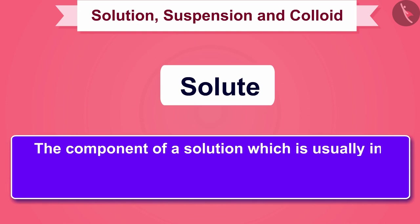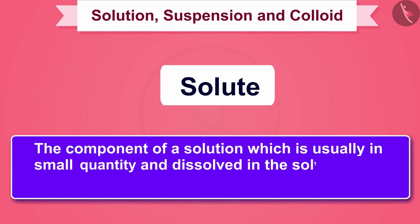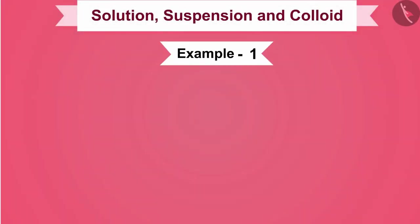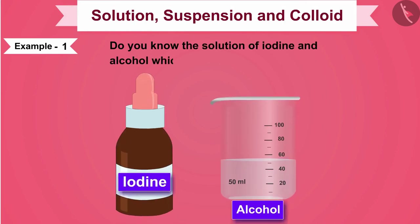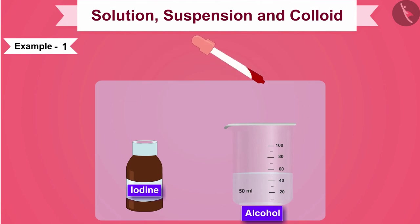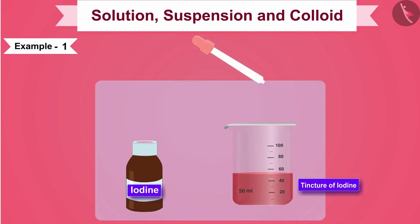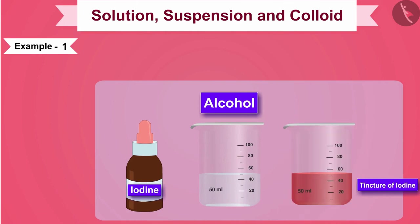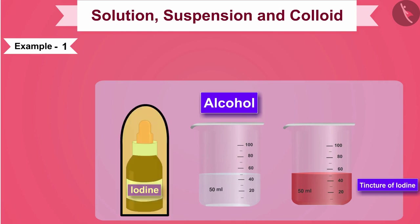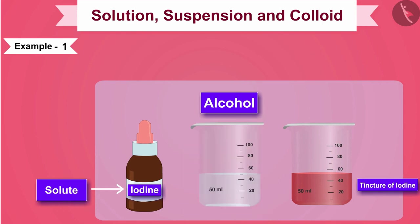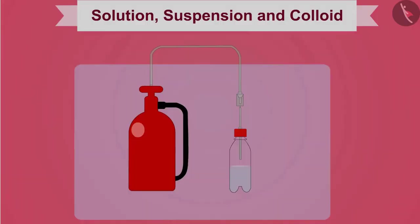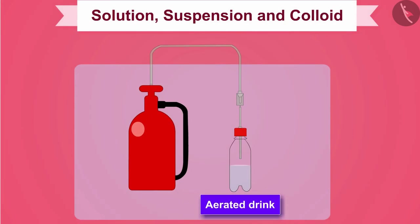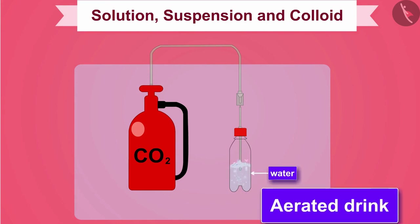The component of a solution which is usually in small quantity and dissolved in the solvent is called a solute. For example, in tincture of iodine, iodine is dissolved in alcohol. Since iodine is in small amount and alcohol is in large amount, iodine is the solute and alcohol is the solvent. Aerated drinks are also a solution in which carbon dioxide is dissolved in water; therefore carbon dioxide is the solute and water is the solvent.